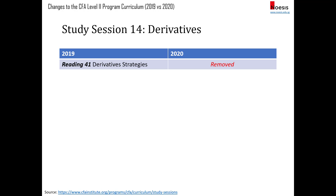For derivatives, they've removed reading 41 on derivative strategies — not everyone's favorite topic — and moved it to level three. The two remaining readings cover valuation of commitments and contingent claims.